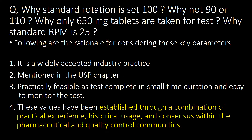Here are a few tricky questions: Why is the standard rotation set at 100 and not 90 or 110? Why are 650 mg tablets taken for this test? Why is the standard RPM 25? The rationale to justify these numbers includes: it is a widely accepted industry practice; it is mentioned in USP chapter 1216; it is practically feasible as the test completes in a short time and is easy to monitor; and most importantly, these values have been established through a combination of practical experience, historical usage, and consensus within the pharmaceutical and quality control communities.